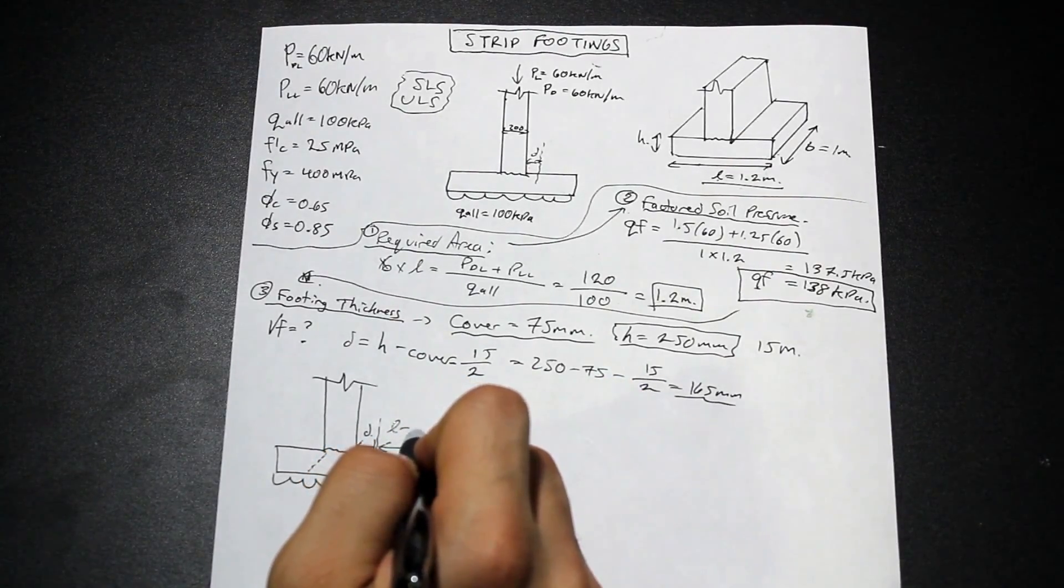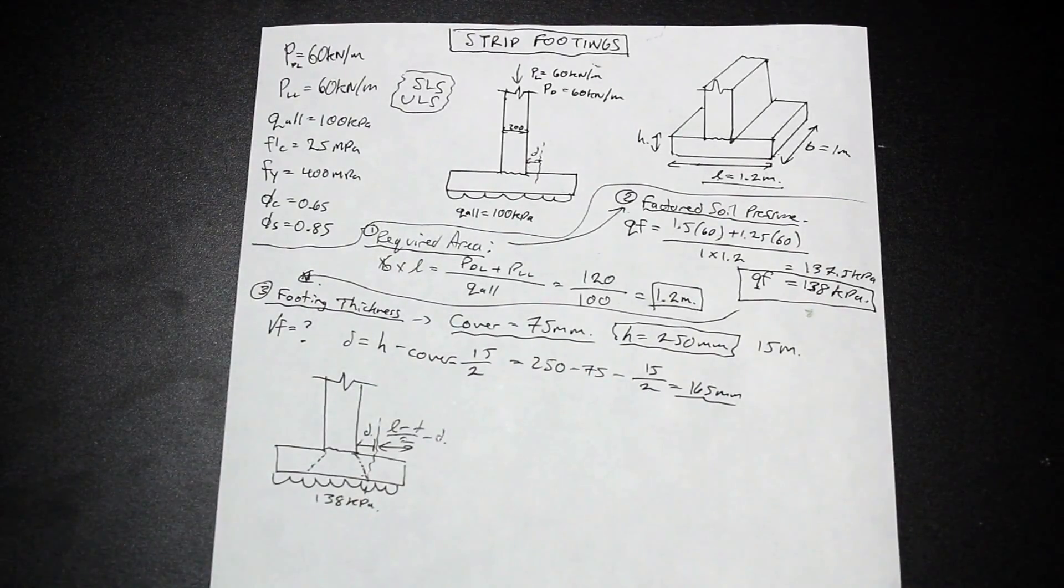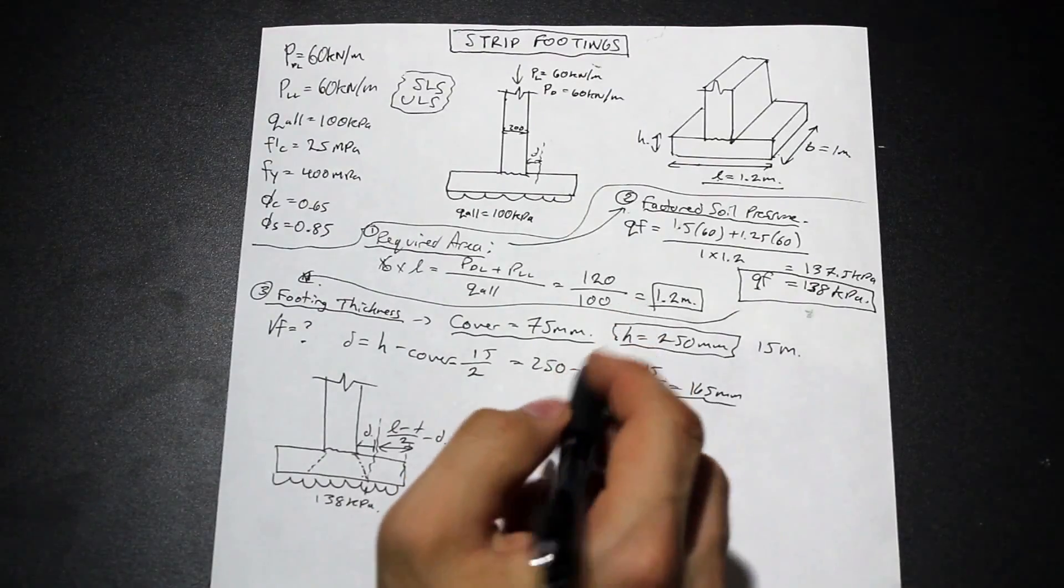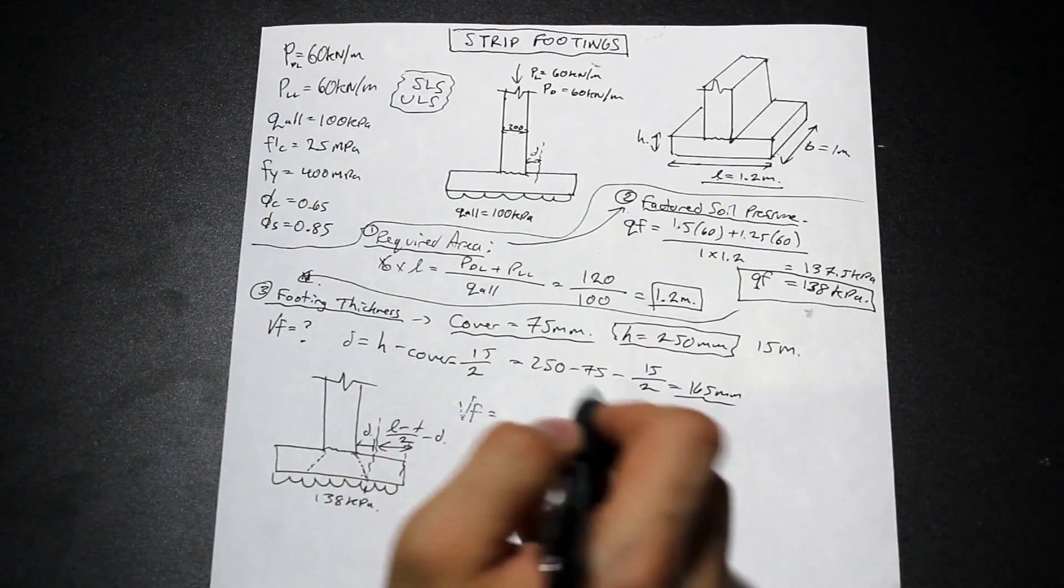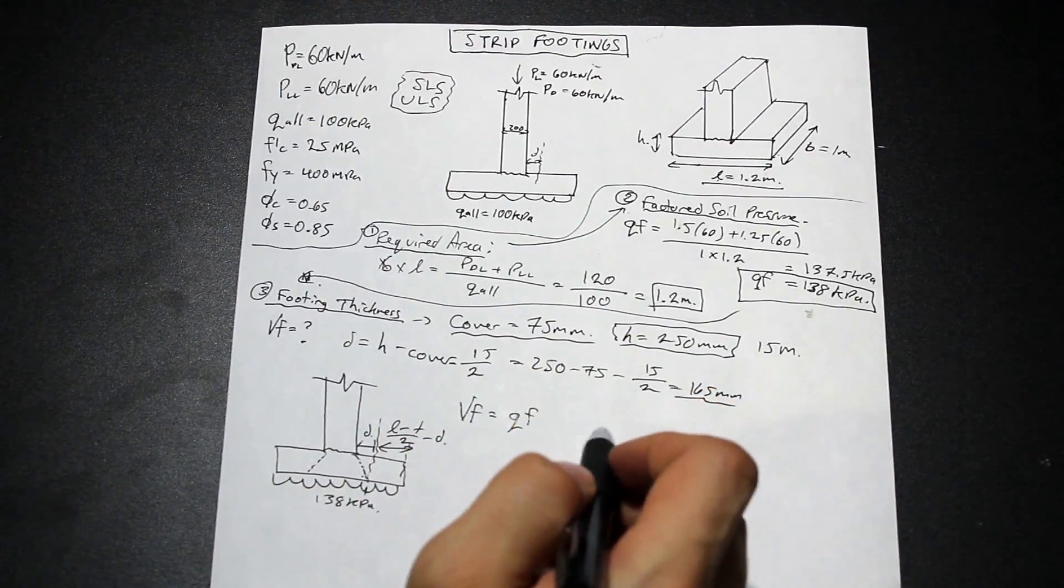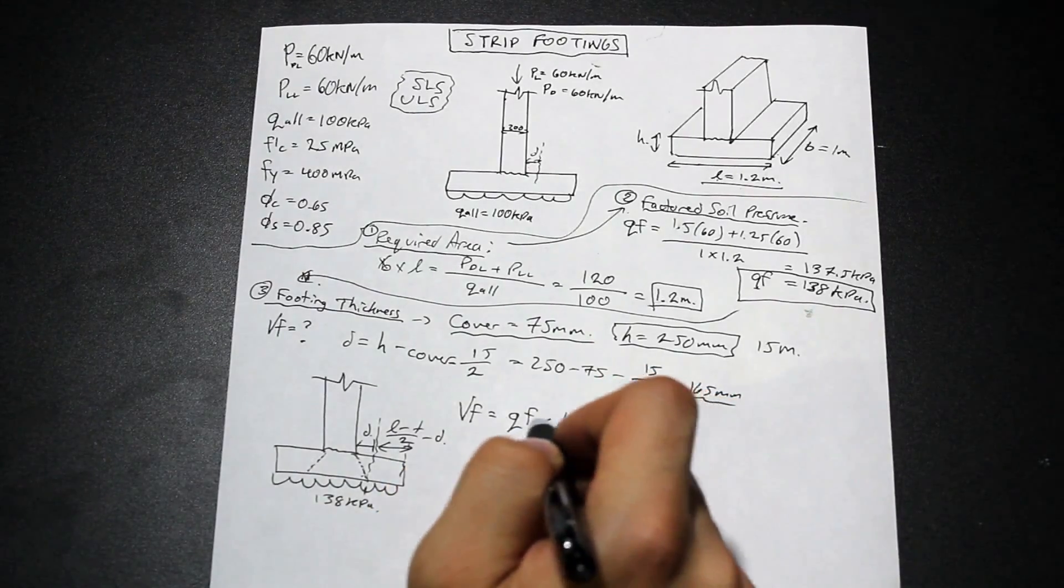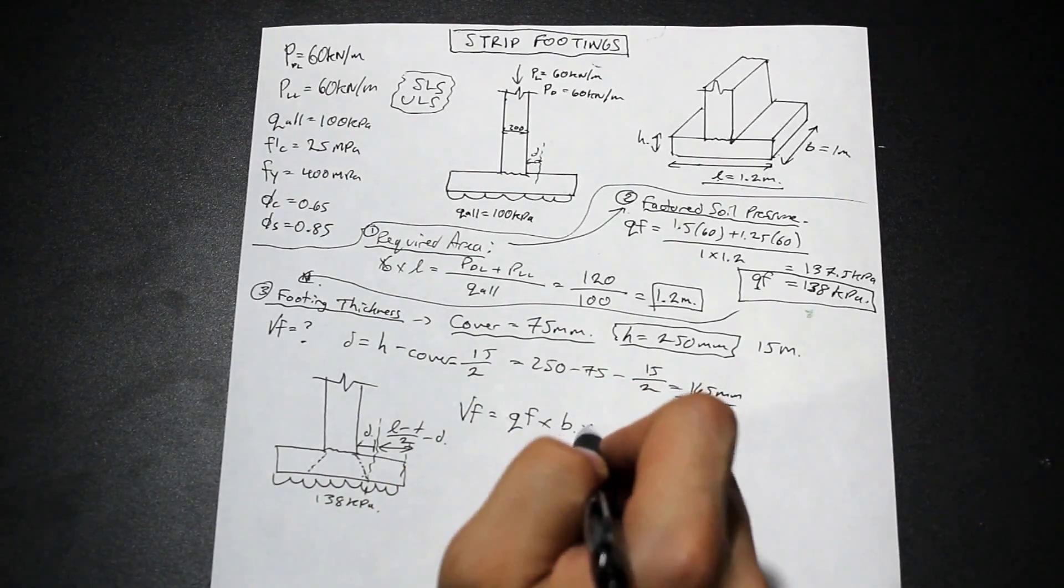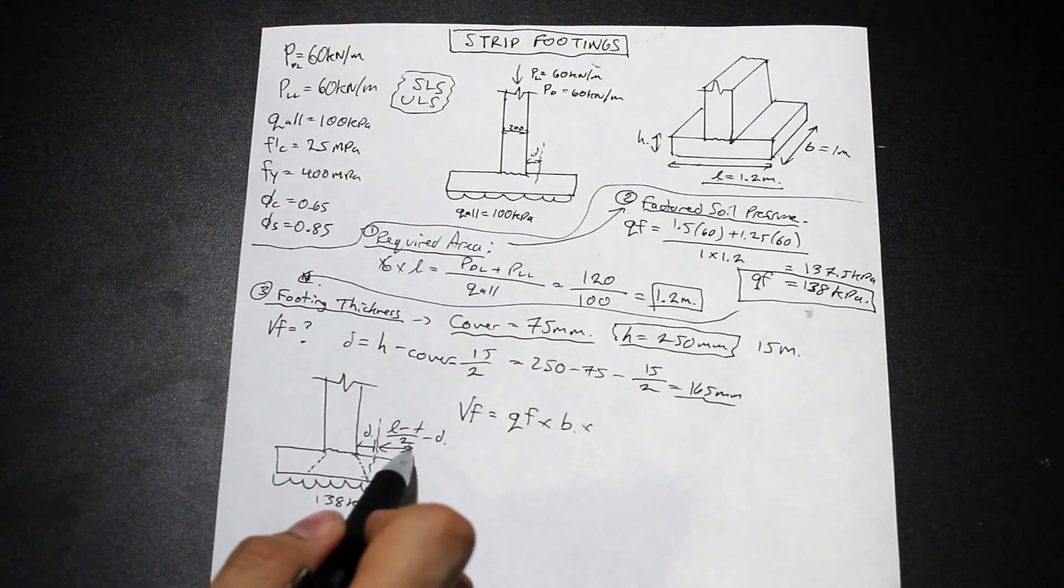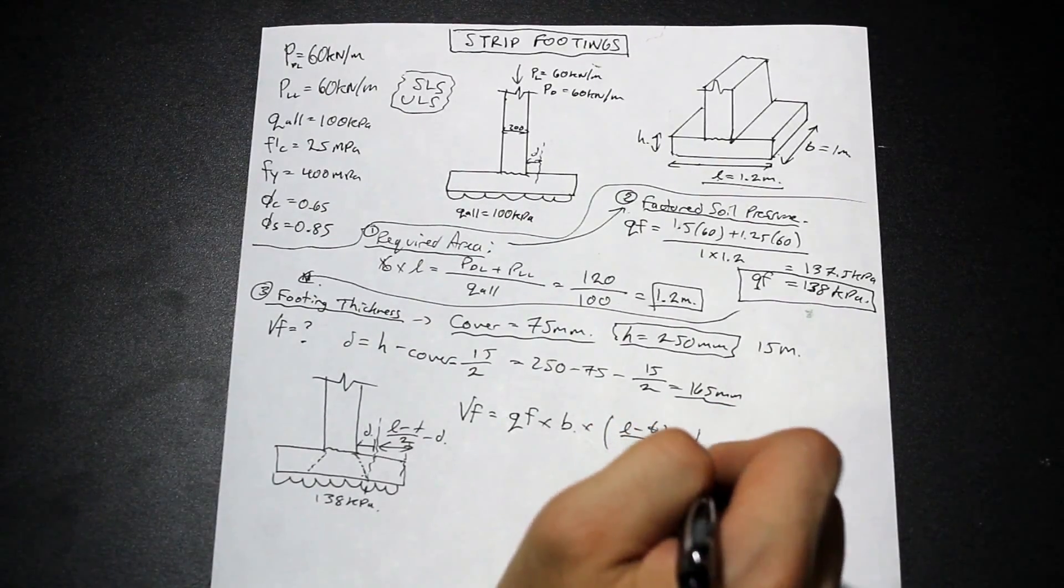And we have that shear plane ends at a distance D from the face of the column. And this is the critical section for one-way shear. And this distance is L minus T over 2 minus D. So that's just some simple arithmetic there. Now, with that all being known, we can find our VF. So what is our VF? Our VF is going to be our factored soil pressure times B, which is the depth into the page. So right now we're at kilonewton per meter.